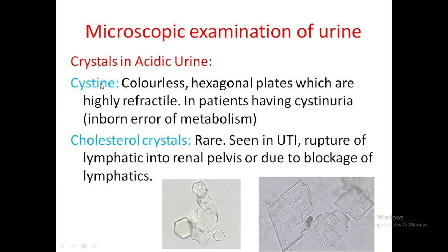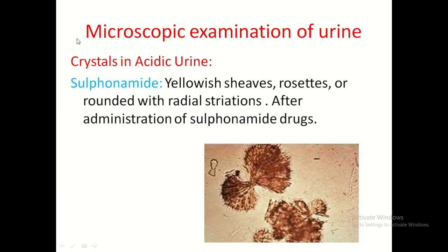Cystine crystals are colourless hexagonal plates, highly refractile, present in the inborn error of metabolism called cystinuria. Cholesterol crystals are rarely seen — colourless, variable shapes but large in size — seen in urinary tract infections or rupture or blockage of lymphatics into the renal pelvis. Sulfonamide crystals due to sulfonamide drugs are yellowish, in the form of sheaves, rosettes, or rounded structures with radial striations.